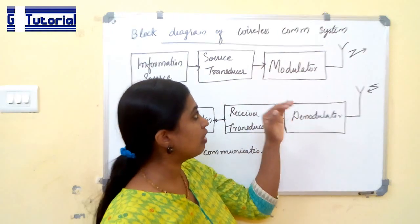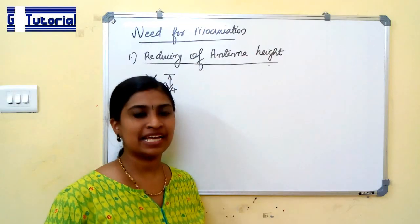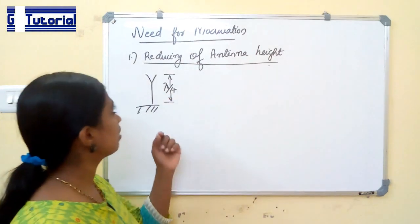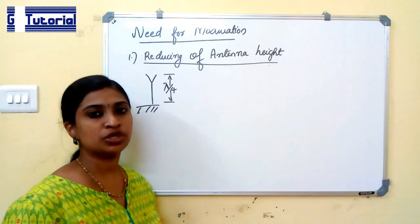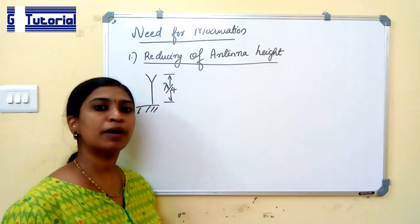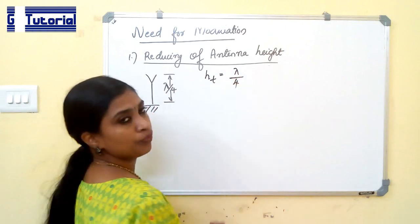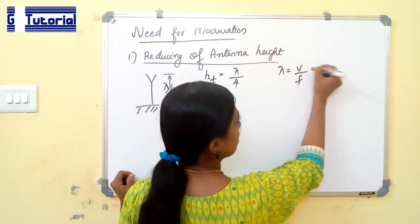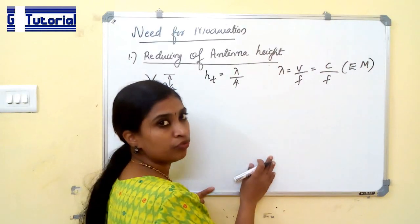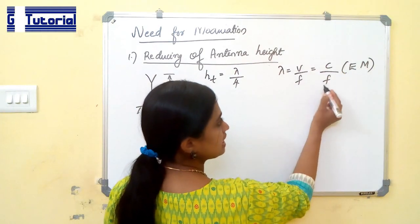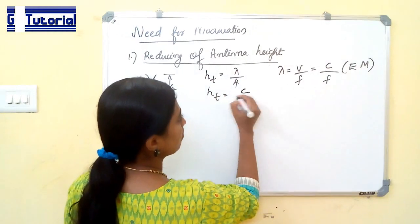Now we can see what is the necessity of a modulator, or what is the need for modulation. The first requirement is reducing the size of the antenna. For faithful transmission of a signal, the height of the antenna should be lambda by 4, where lambda equals velocity divided by frequency. For wireless communication, we use electromagnetic waves which travel at the velocity of light C, so the antenna height is C divided by 4F.